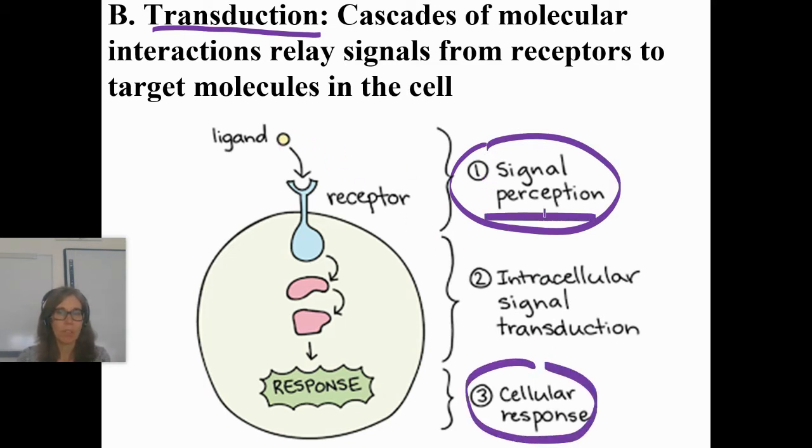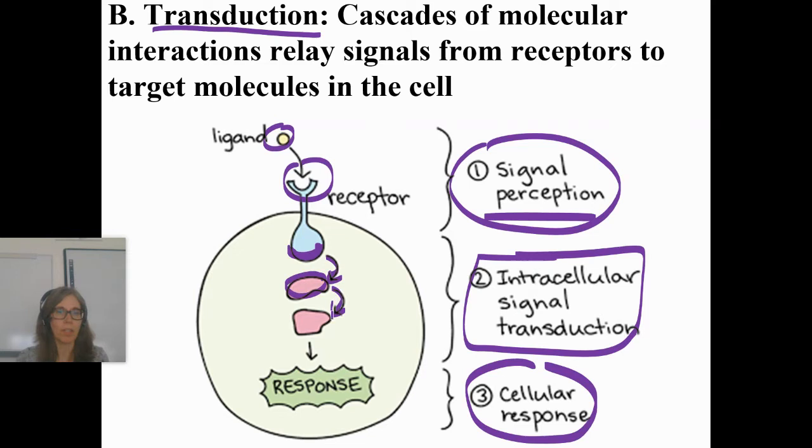The signal perception happens first, and we've already done some videos on that where the ligand binds to the receptor. The first step inside, the first part of the signal transduction pathway, is that the receptor typically will change shape. And then that will activate something else or inhibit something else, which will then affect another molecule, and so on. There might be several steps here, and then finally you get some kind of cellular response, like the cell does mitosis, or the cell is a muscle cell that contracts harder, or the cell takes in glucose. So today we're going to talk about this part, the signal transduction that happens inside the cell.